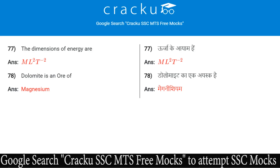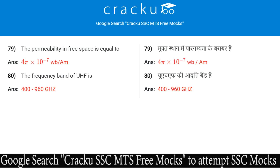Dolomite is an ore of magnesium. The permeability in free space is equal to 4π × 10⁻⁷ Weber per ampere meter.